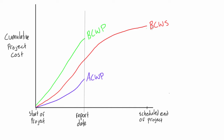BCWP will sometimes be above BCWS, sometimes below, and ACWP can vary too — I just picked a random orientation for them. With these three values — the budgeted cost of work scheduled, the actual cost of work performed, and the budgeted cost of work performed — we are able to get the cost performance index, the schedule performance index, the cost variance, and the schedule variance.